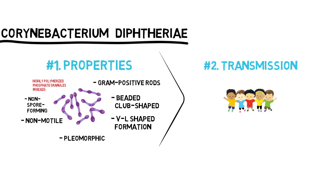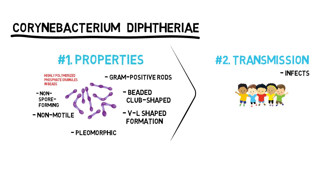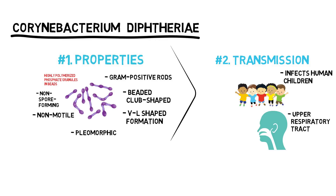Transmission. Human children are the only natural host of Corynebacterium diphtheriae. Both toxigenic and non-toxigenic organisms reside in their upper respiratory tract and are transmitted by airborne droplets. The organism can also infect the skin at the site of a pre-existing skin lesion, occurring via poor skin hygiene.